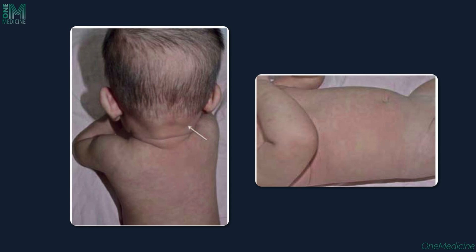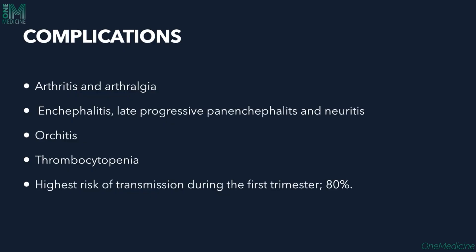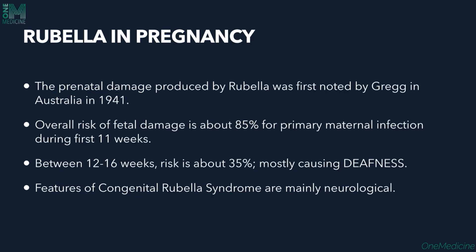Maculopapular rashes can also be seen on the trunk. Complications include arthritis, arthralgia, encephalitis, late progressive panencephalitis, neuritis, and thrombocytopenia. Importantly, the highest risk of transmission to the fetus is during the first trimester at 80% — if a pregnant woman is affected in the first trimester, there is an 80% chance of the neonate being affected.